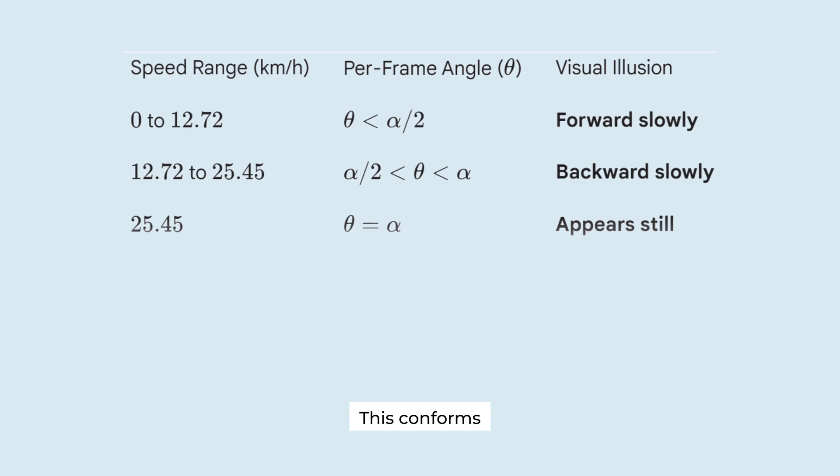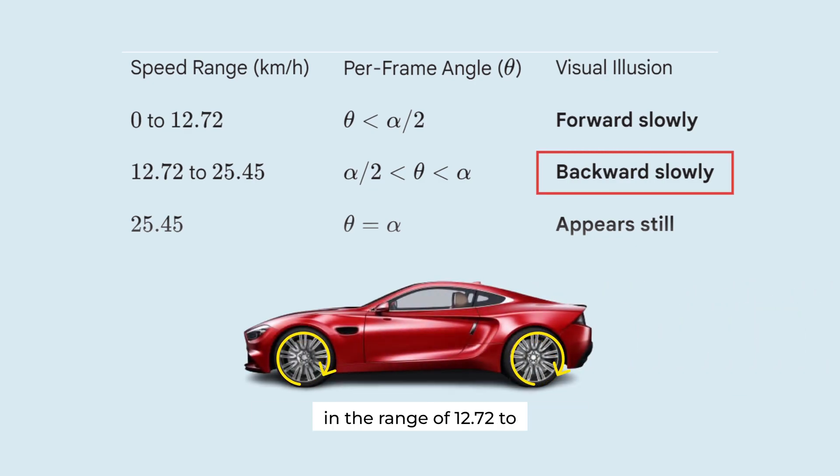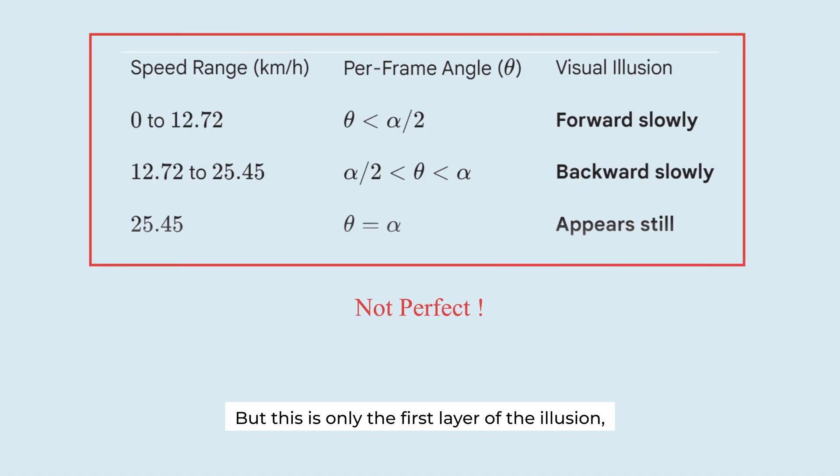This confirms that the wheel appears to spin backward in the range of 12.72 to 25.45 km per hour. But, this is only the first layer of the illusion.